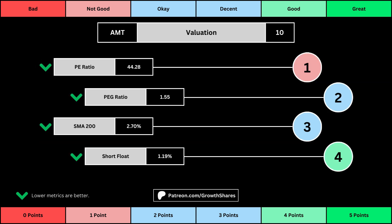This third set of metrics deals with the valuation of the company's stock based on its business. Think of the P/E ratio as a measure of speculation around the stock — we want it low. The PEG ratio adds earnings growth with the P/E ratio. Then, the 200-day simple moving average is the average stock price over that period; we want that low because it means we have a cheaper stock price. And short float is basically how bearish other investors think of the stock. For these four metrics, we want the values to be as low as possible, which will give us a higher point total within the bubbles.